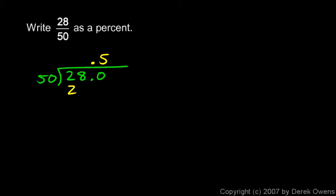50 doesn't go into 28, but it does go into 280 five times. I know that 5 times 50 is 250, so I write that and I subtract and I get 3 and a 0. And I need one more zero out here, and that zero comes down here, and I have 300. 50 will go into 300 six times, and 6 times 50 is 300, and I subtract and I'm done.